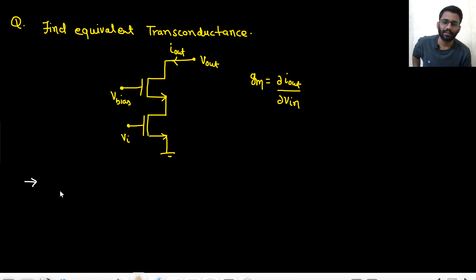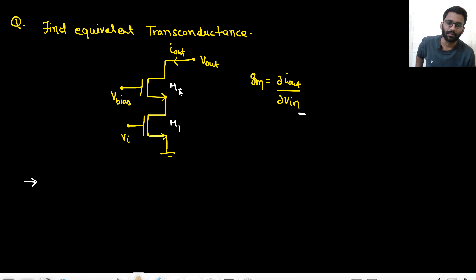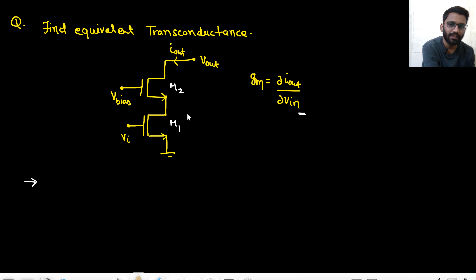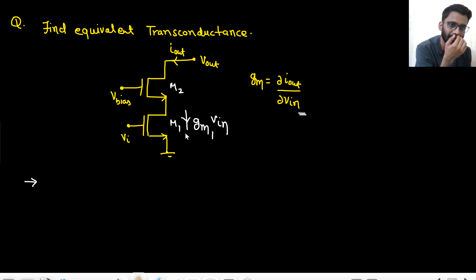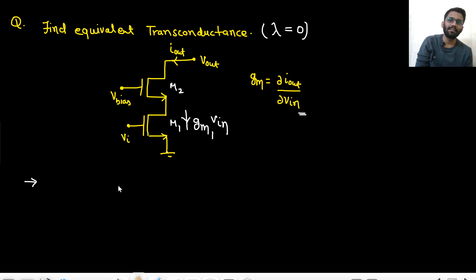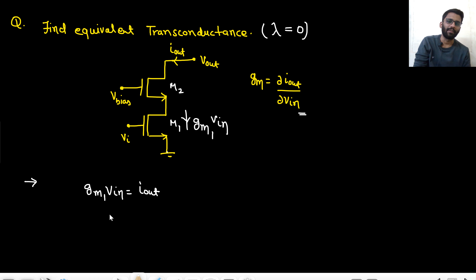In this question, find equivalent transconductance, defined as output current divided by input voltage. This is VIN. The current here is gm1·VIN. Lambda equals 0, so this same current equals Iout. Therefore gm1·VIN = Iout, meaning the equivalent Gm = Iout/VIN = gm1. Very easy — no need for pi model or re model. This is just the method of solving MOSFET amplifier problems.